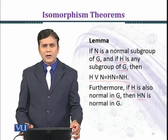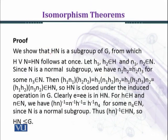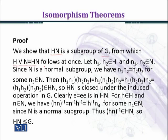Let's prove the lemma. We show that HN is a subgroup of G, from which H∨N = HN follows at once, because H∨N is the smallest subgroup of G containing HN. So if HN is itself a subgroup of G, then H∨N coincides with HN.